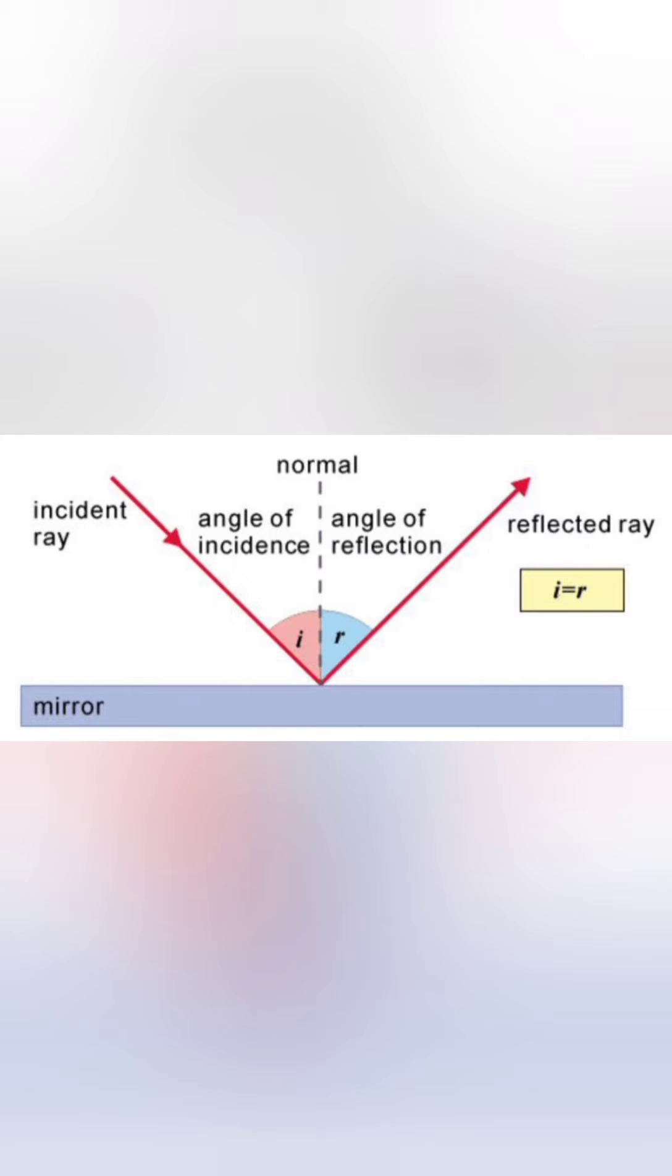Incident ray: The ray of light that strikes the surface is called the incident ray. Reflected ray: The ray of light which is returned back into the same medium after striking the surface is called the reflected ray.